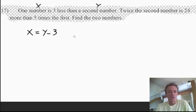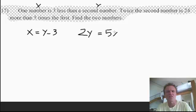You've got an equation. Twice the second number, so y is the second number, so here we go. Twice the second number, 2y, equals 24 more than five times the first. So here's five times the first. What's 24 more than that? You would add 24. So there we go.